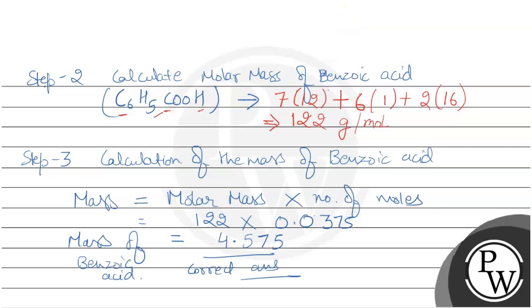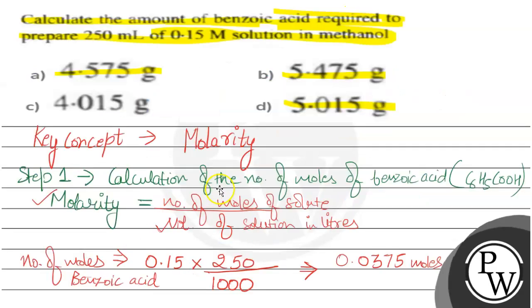So we can say the answer is option A, which is the correct option. The mass of benzoic acid is 4.575 grams. Hope the explanation was understandable. Thank you.